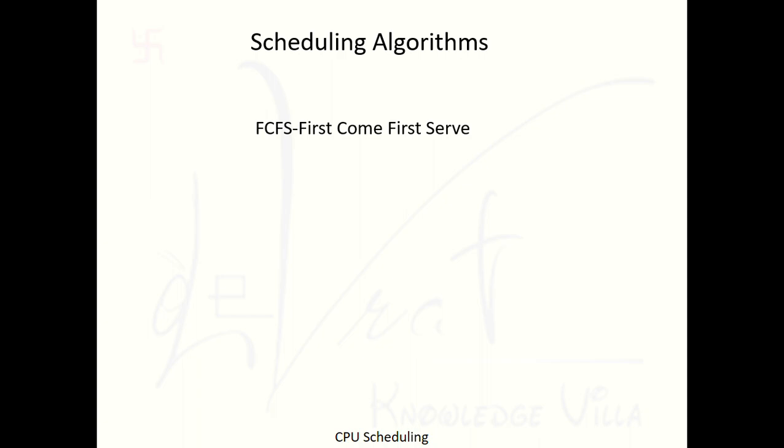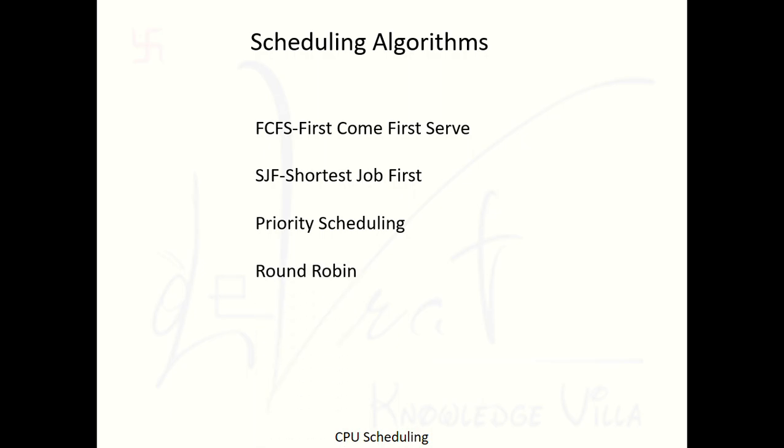There are four types of CPU scheduling algorithms: first is First Come First Serve, second is Shortest Job First, third is Priority Scheduling — which has two subtypes: Preemptive Priority Scheduling and Non-Preemptive Priority Scheduling — and the last is Round Robin CPU scheduling.